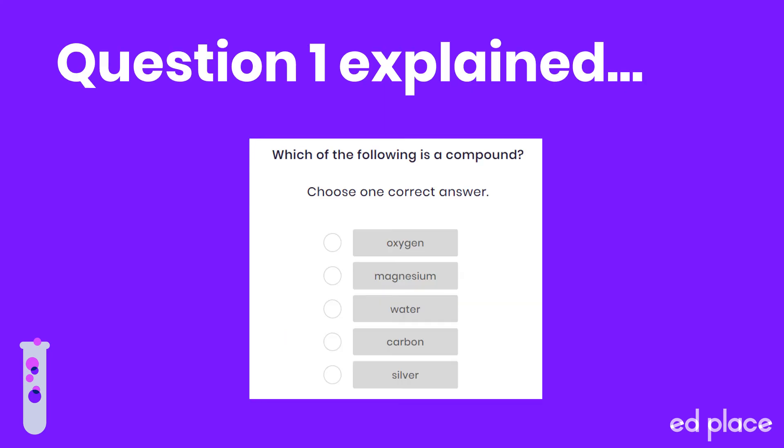Let's begin with question one. We need to identify the compound amongst the list of elements. The answer is that water is a compound, as it requires two different elements to form. Water is comprised of hydrogen and oxygen atoms — two hydrogen atoms to one oxygen atom — which is why its formula is H2O.